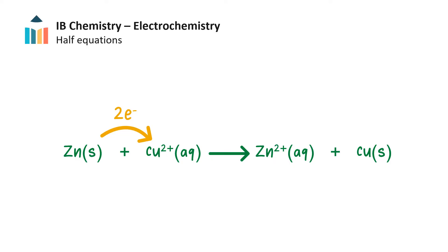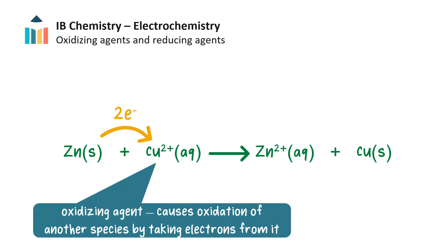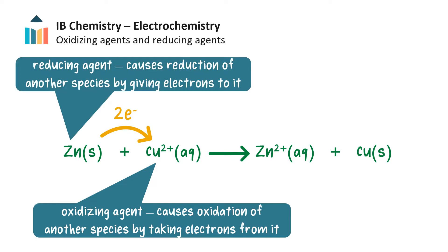Overall, electrons are transferred from zinc metal to copper ions. The oxidizing agent is the species that causes the oxidation of another species by taking electrons from it. Since the copper(2+) ion gained electrons from zinc, causing zinc to be oxidized, the copper(2+) ion is the oxidizing agent. The reducing agent is the species that causes the reduction of another species by giving electrons to it. Since zinc metal transferred electrons to the copper(2+) ions, causing them to be reduced, zinc is the reducing agent.